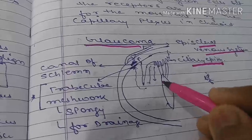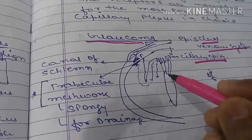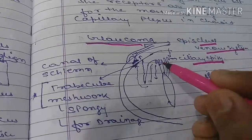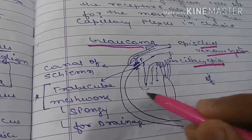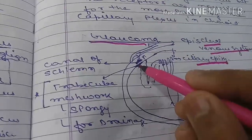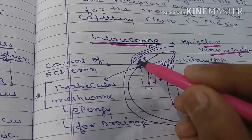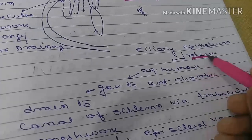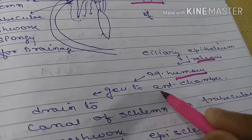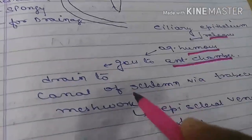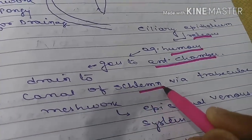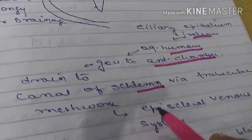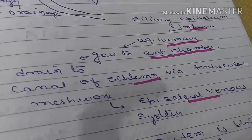The complete pathway: ciliary epithelium secretes aqueous humor into the posterior chamber, then to the anterior chamber, through the trabecular meshwork to the canal of Schlemm, and then drains to the episcleral venous system.